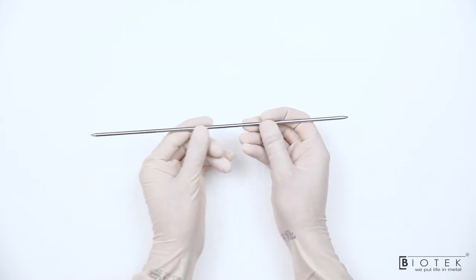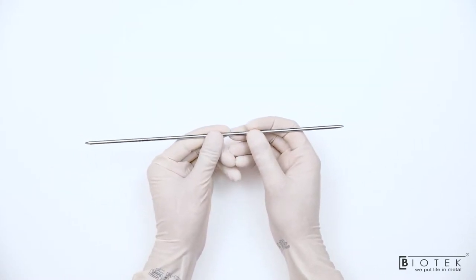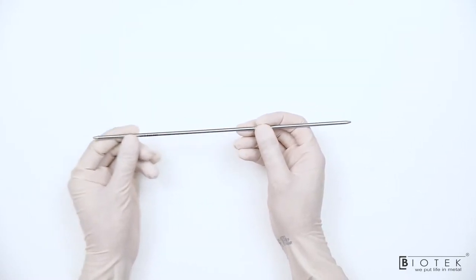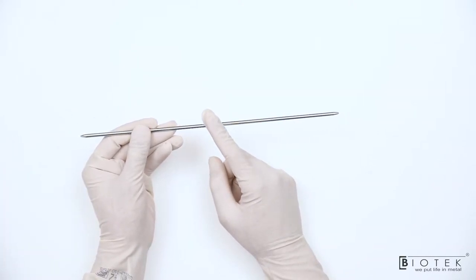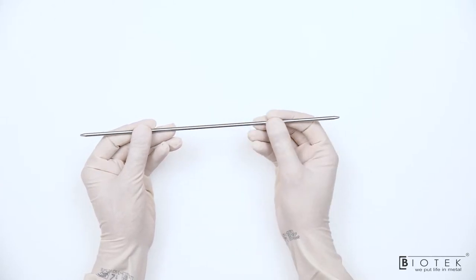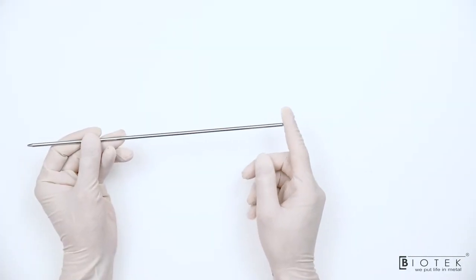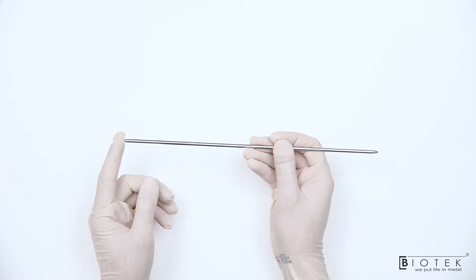This is known as Bissinger Rod. This is used to create arthroscopy portals and put a cannula over the Bissinger Rod. This is also used to switch the portals in between, so also known as the switching stick. The tip should be blunt so that it does not damage the soft tissue.